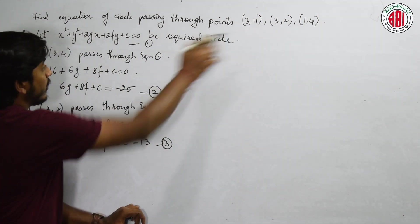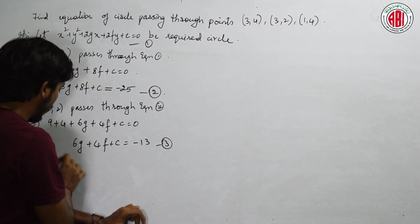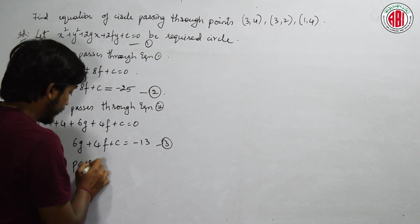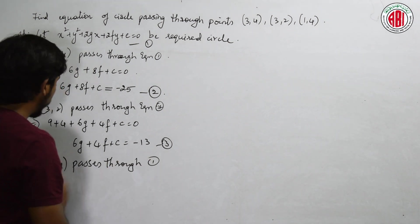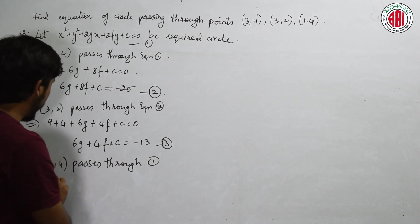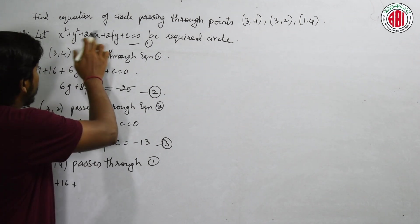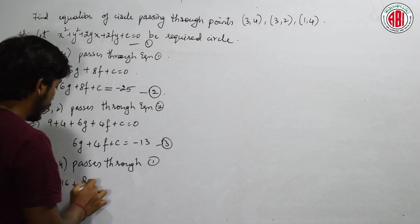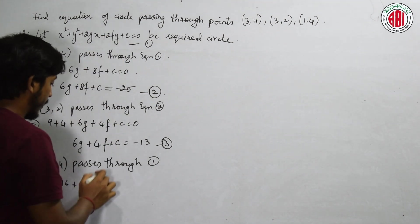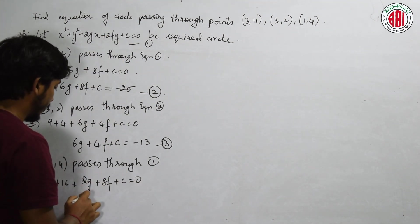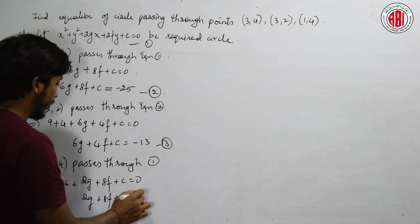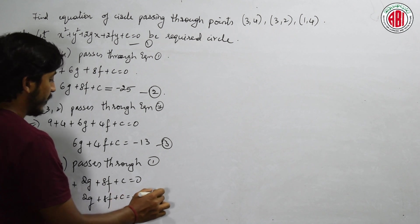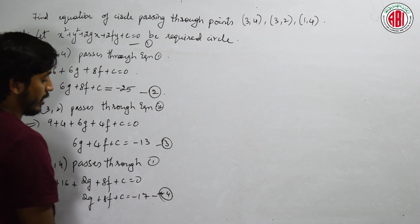Next, the third point: 1 comma 4 passes through equation 1. Therefore, that will be 1 plus 16. Write 4 squared plus 2 times 1 gives 2g, plus 8f plus c equal to 0. This will be 2g plus 8f plus c equal to minus 17. Let us say this as the fourth equation.